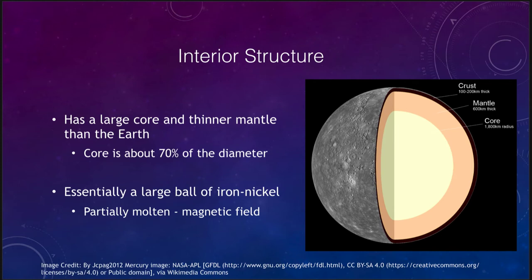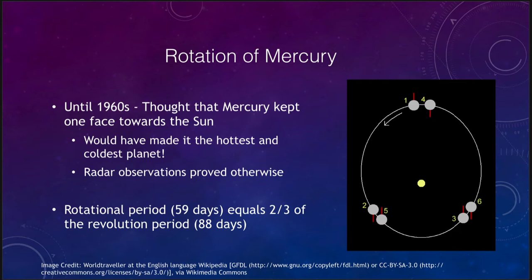Mercury does not rotate very quickly, and it has an interesting rotation pattern. In fact, until the 1960s it was thought that Mercury might be simultaneously the hottest and the coldest planet — that it might be tidally locked to the Sun, much as the Moon is tidally locked to the Earth, meaning one side always faced the Sun and one side always faced away. However, radar observations in the 1960s showed otherwise.